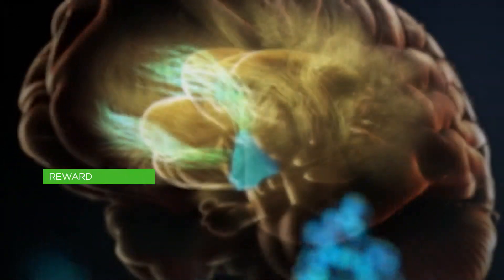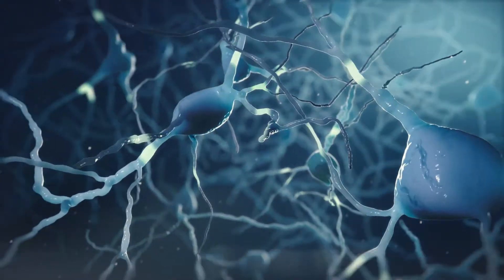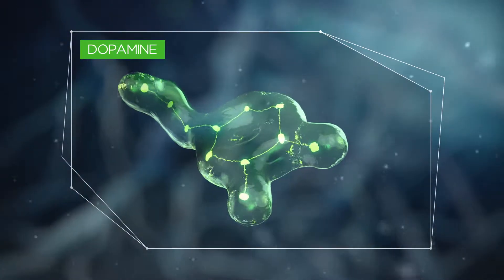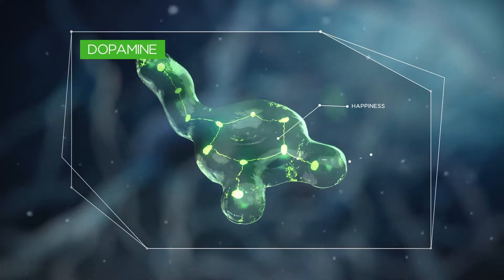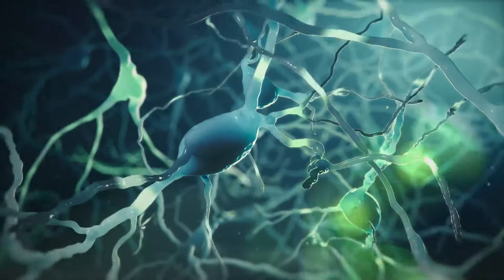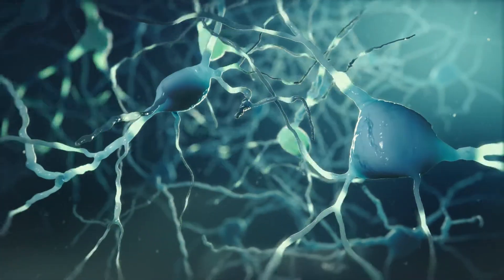Oxytocin is also known to activate reward pathways in the brain, which release a neurotransmitter known as dopamine. These pathways are associated with feelings of happiness and pleasure. The positive emotions we feel from dopamine release reinforce the generous behaviors promoted by oxytocin.